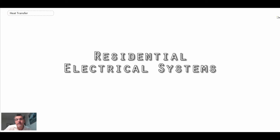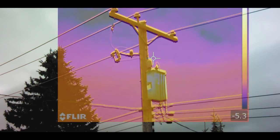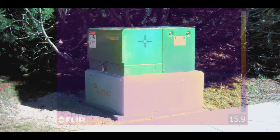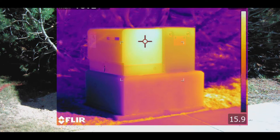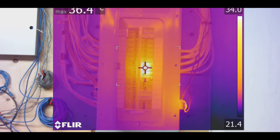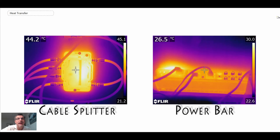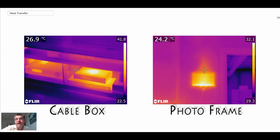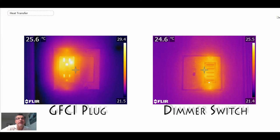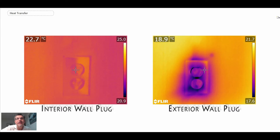Now let's look at residential electrical systems. Power comes to our homes from plants that can be very far away at high voltage, which is reduced by transformers on poles or underground. It comes into our homes via a distribution panel. Ground fault circuit interrupters, stoves, clocks, telephones, cable splitters, power bars, cable boxes, and photo frames all generate heat, as you can see via infrared imaging.